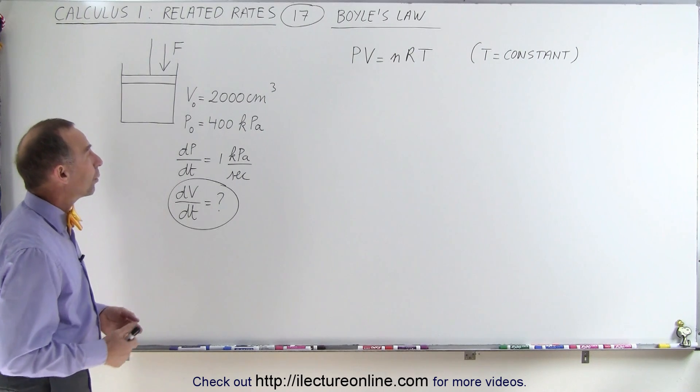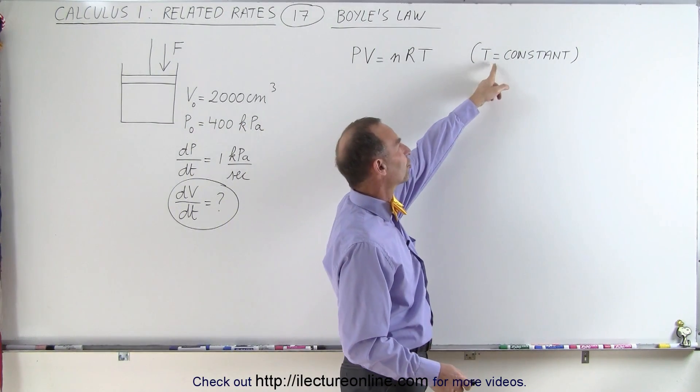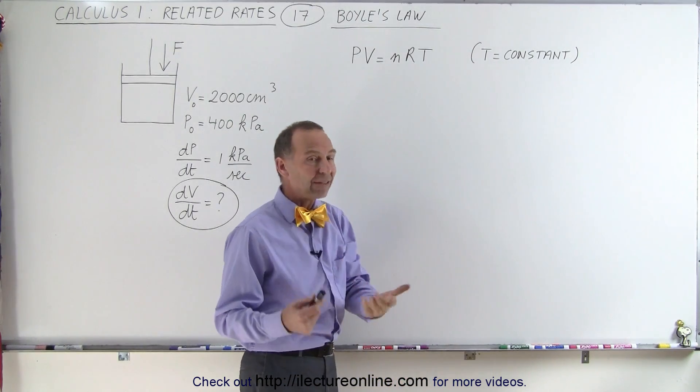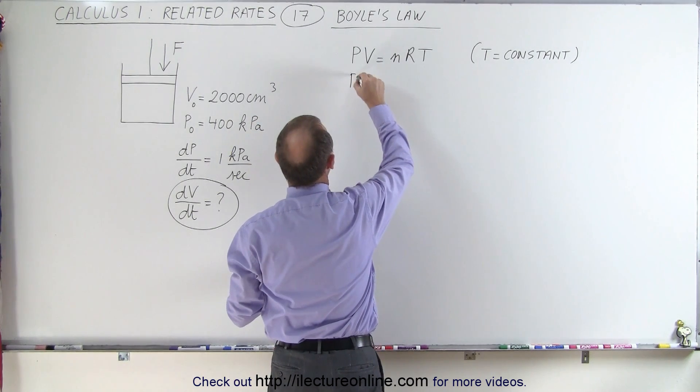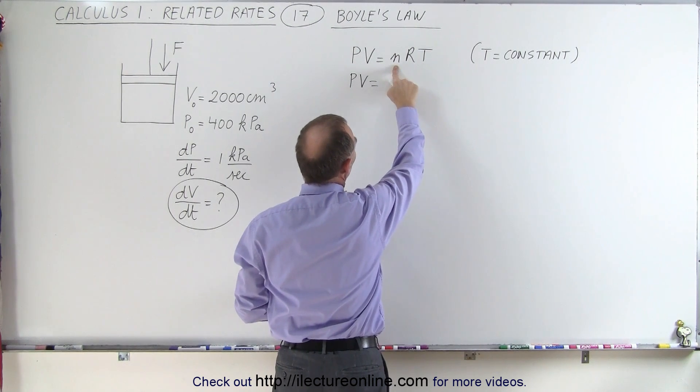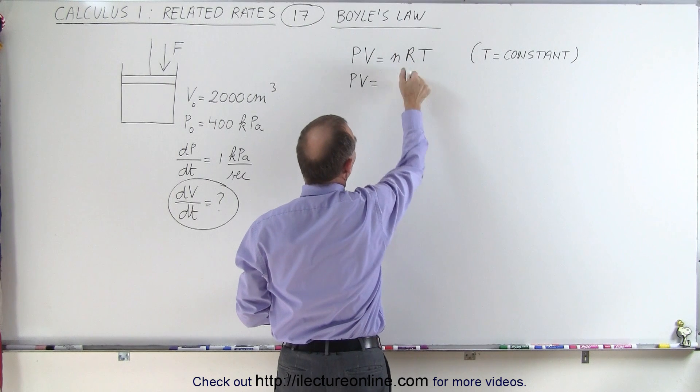With Boyle's Law, we know that we have a thermodynamic process where the temperature will be constant. And so PV equals nRT, which is our ideal gas equation, then means that PV is equal to nRT, where n is the number of moles, r is a constant, and T will be kept constant with Boyle's Law.